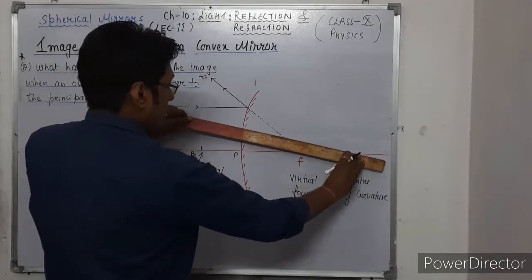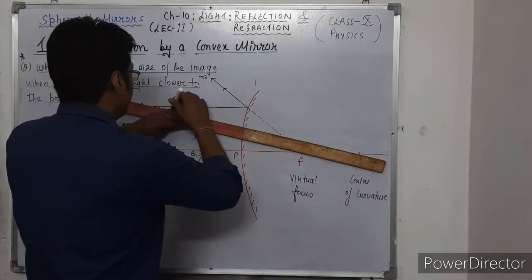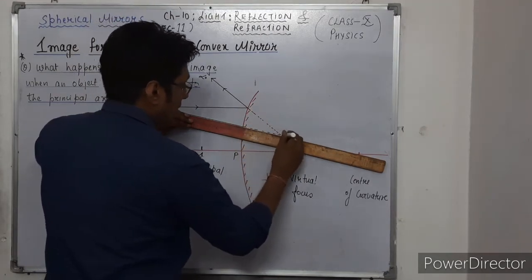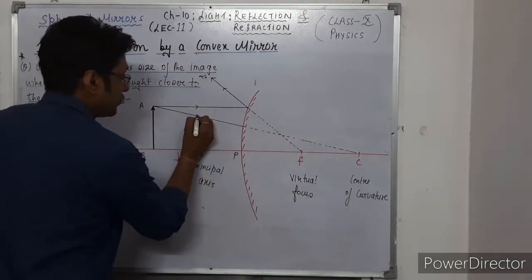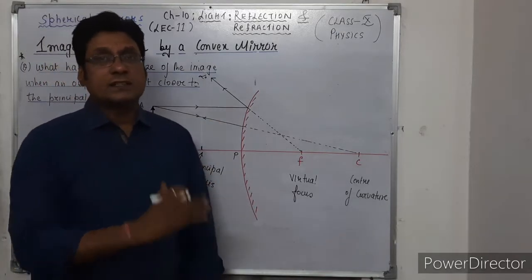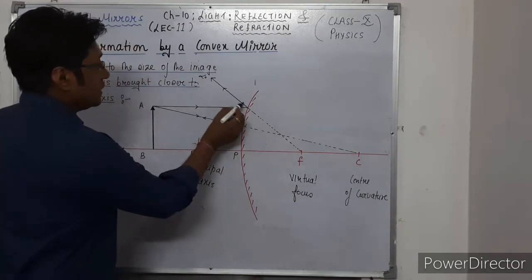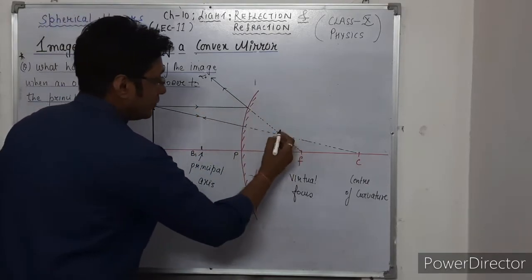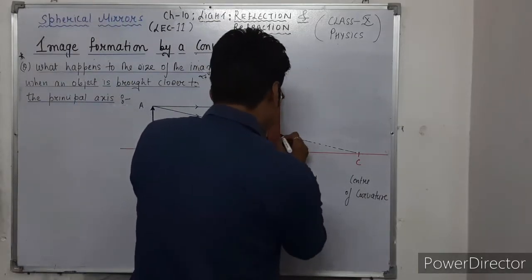The second ray we will take toward the center of curvature. A ray going toward the center of curvature retraces its path, because in this case the angle of incidence and angle of reflection are both zero. These are the two reflected rays — both going toward the back. So the image is formed here. This is your formed image.